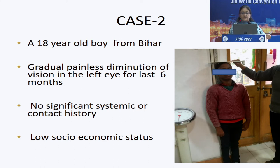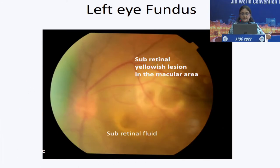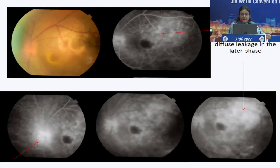An 18-year-old boy from Bihar with gradual painless diminution of vision in the left eye for last six months. No significant systemic or contact history, low socioeconomic status. The patient had this huge yellowish subretinal lesion in the macular area with subretinal fluid.